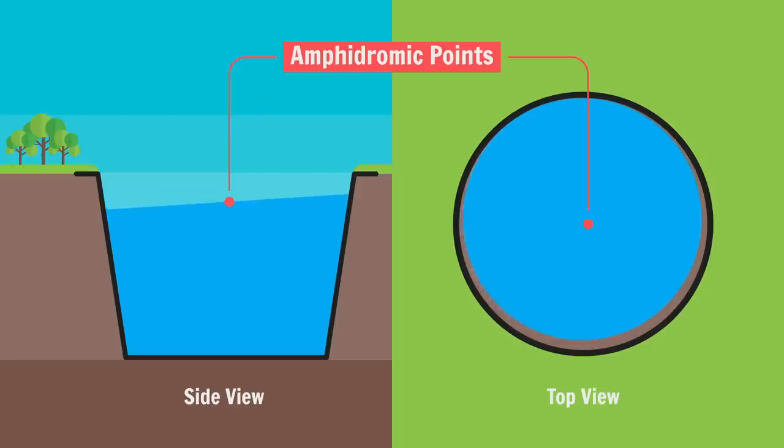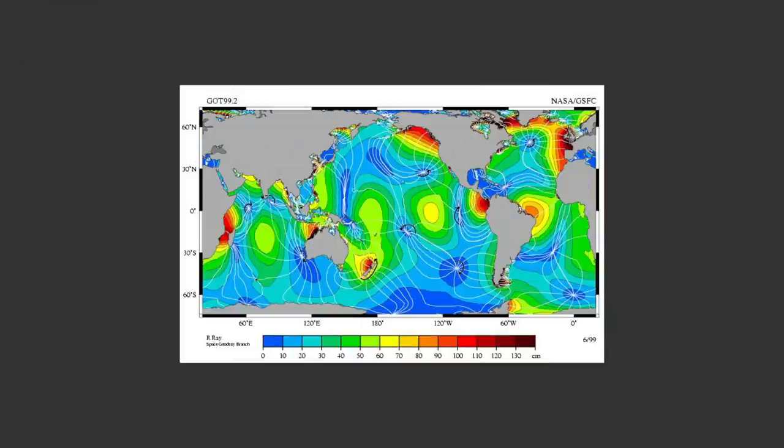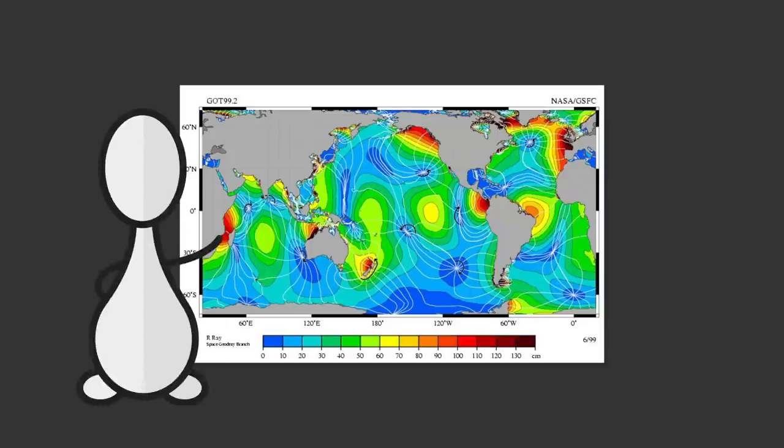tides are just standing waves centered on an amphidromic point. A point which does not experience tides. In real life, Earth features several of these amphidromic systems. And,